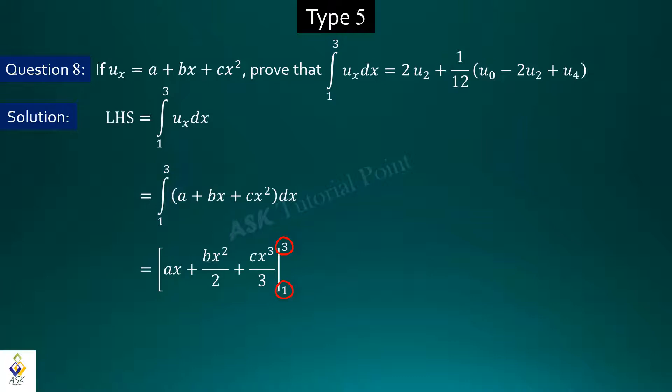Next step, I will place the limit and simplify to get 2A plus 4B plus 26C divided by 3. Here, I will check the right hand side expression that the left hand side simplified expression should appear.